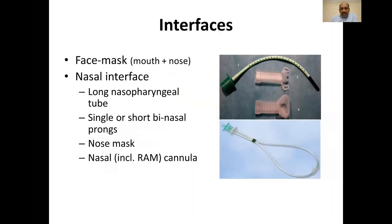The interfaces for most NIV modes include a nasal interface, which could be a long nasopharyngeal tube — not used very commonly. The common interfaces are short binasal prongs, nasal mask, and nasal cannula. The face mask, which covers mouth and nose, is a routine device used at the time of resuscitation. For long-term ventilation, however, it is not practically possible because it is very difficult to secure properly on the face.